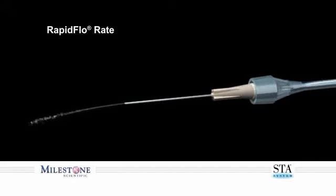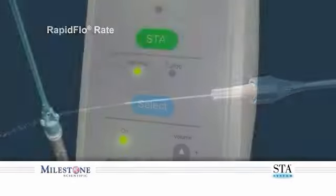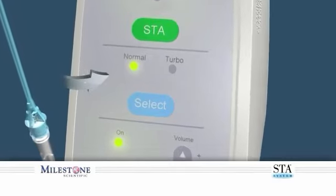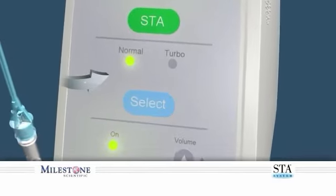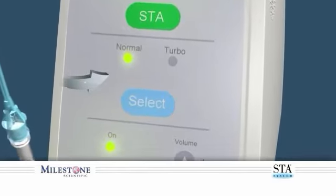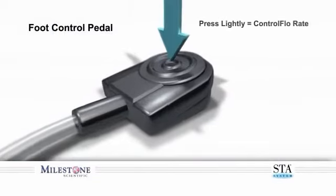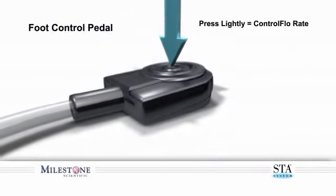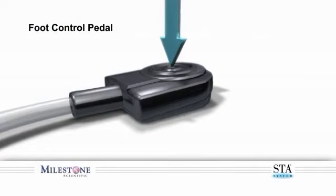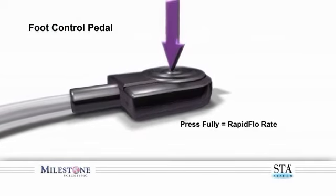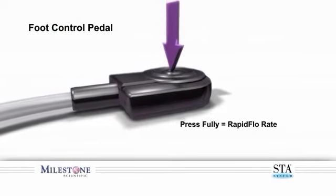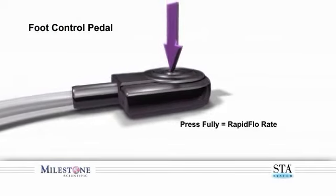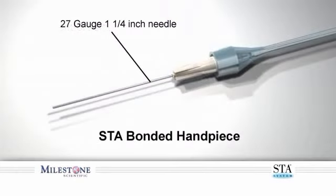In the normal mode, the foot control has two distinct positions. Depressing the foot control lightly allows you to enter the controlled flow rate. Fully depressing the foot control allows you to enter the rapid flow rate. It is recommended that you use a 27-gauge, 1-1/4-inch needle to perform the inferior alveolar nerve block.